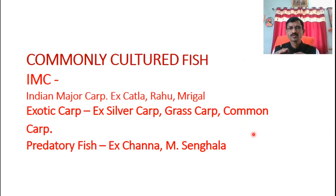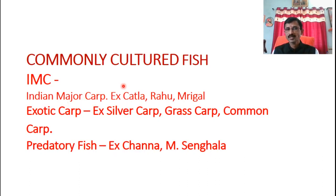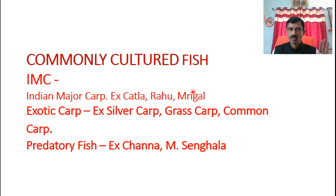Commonly cultured fish: which type of fish are cultured in the areas? Important - number one is IMC. What is IMC? IMC means Indian Major Carp. Indian means the fish belongs to India. Which are they? Katla, Rohu, Brigham. Carp means toothless mouth - they don't have teeth - called carp. So Katla, Rohu, and Brigham are Indian Major Carps. More fishes exist but as per our syllabus, these three are very important, belonging to Indian Major Carp, commonly cultured in the areas.